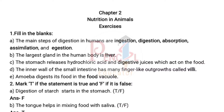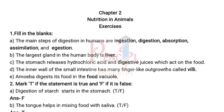A) The main steps of digestion in humans are ingestion, digestion, absorption, assimilation, and egestion. B) The largest gland in the human body is liver. C) The stomach releases hydrochloric acid and digestive juices which act on the food. D) The inner wall of the small intestine has many finger-like outgrowths called villi. E) Amoeba digests its food in the food vacuole.